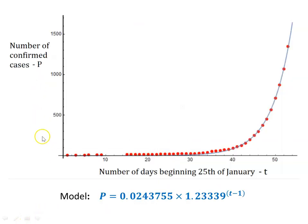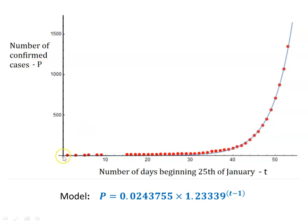Using a mathematics package, you can model the data — there are numerous mathematics and statistics packages available. The model I've come up with: when the expression on the right is plotted, t is the number of days since January the 25th, and p is the number of people confirmed to have COVID-19. When we plot this, that's the blue curve here.